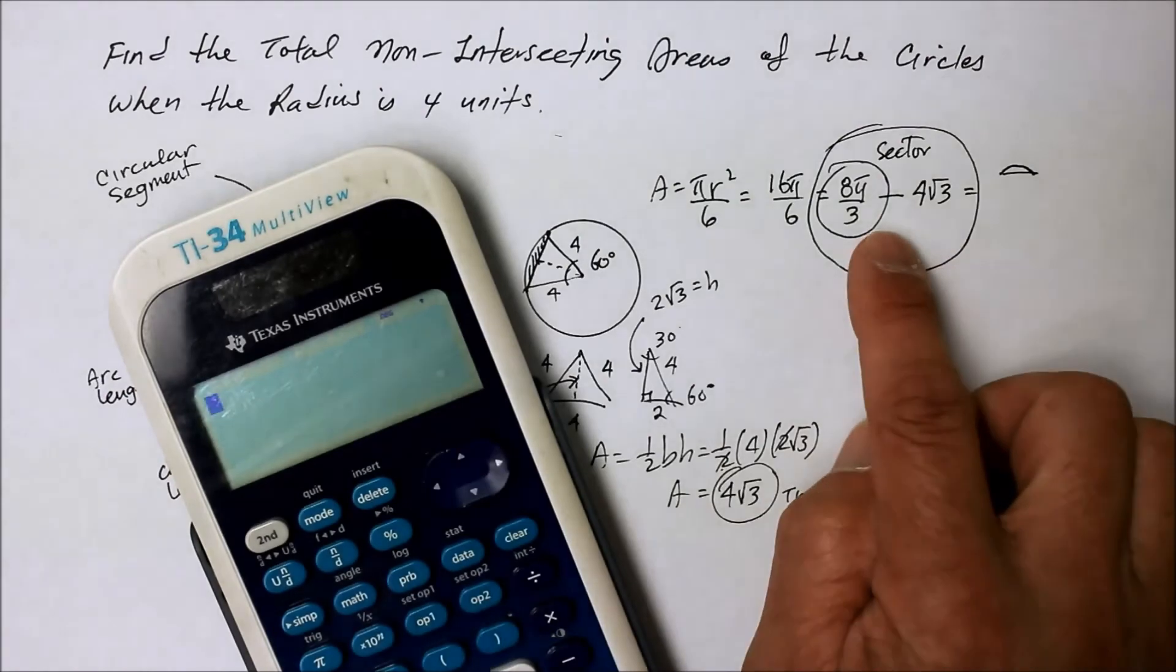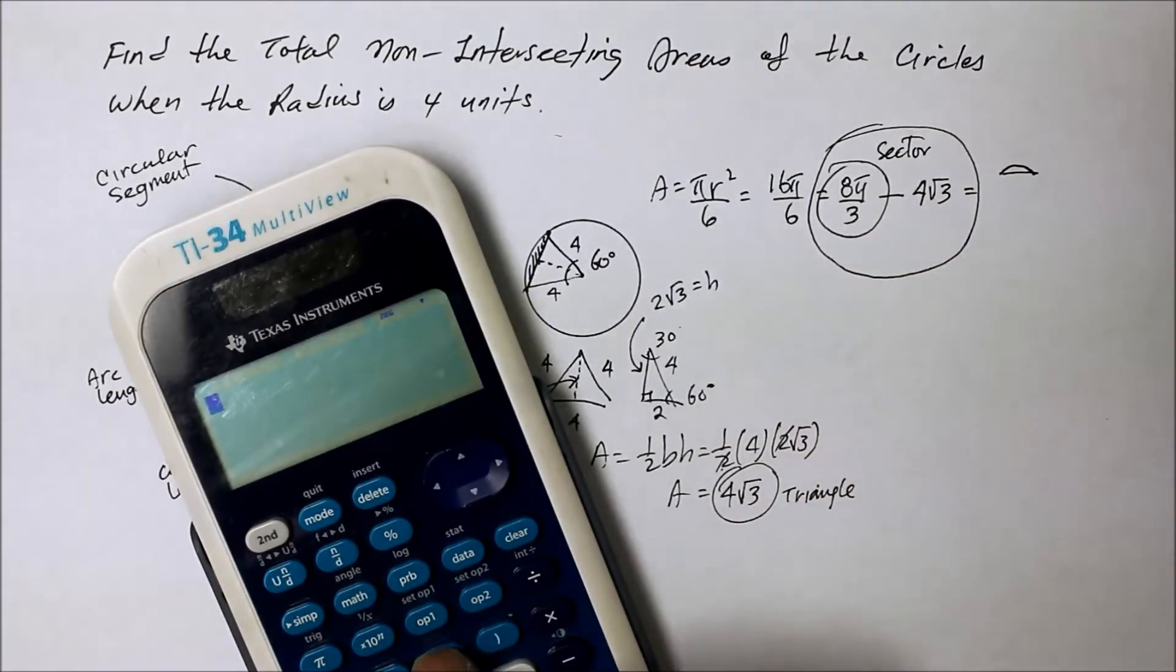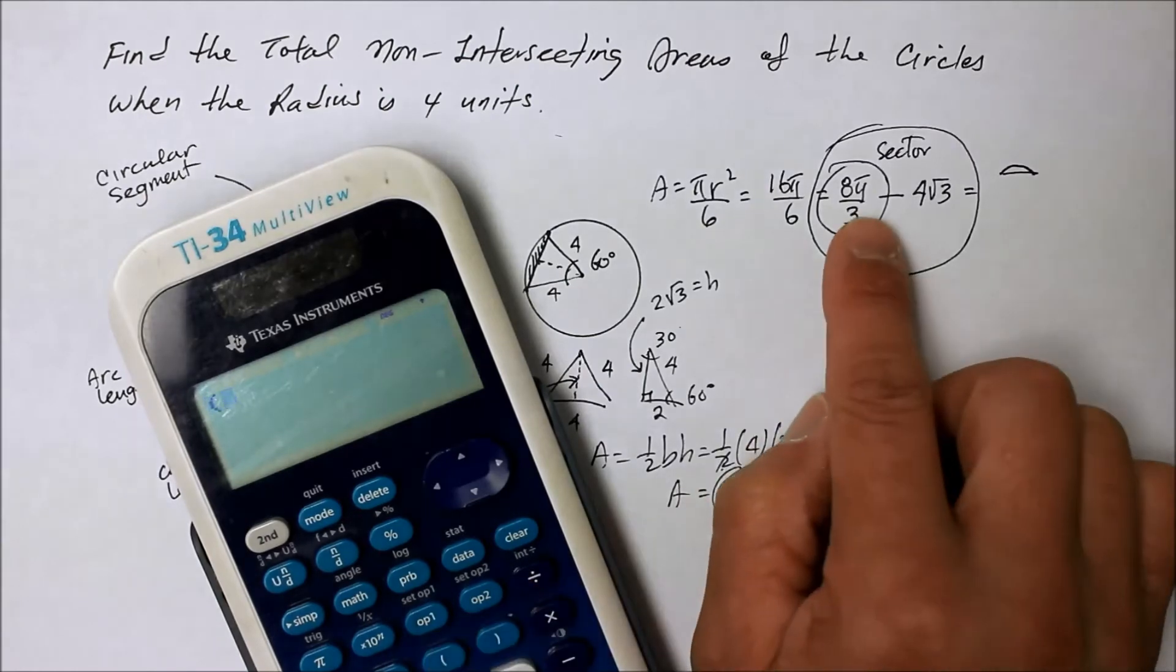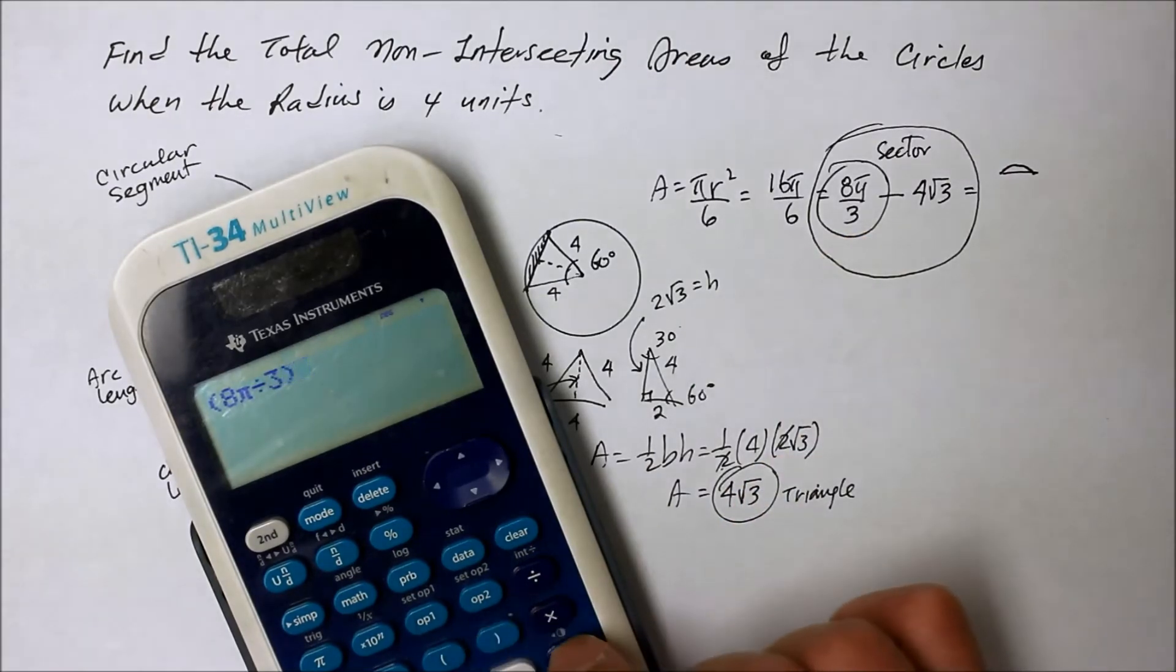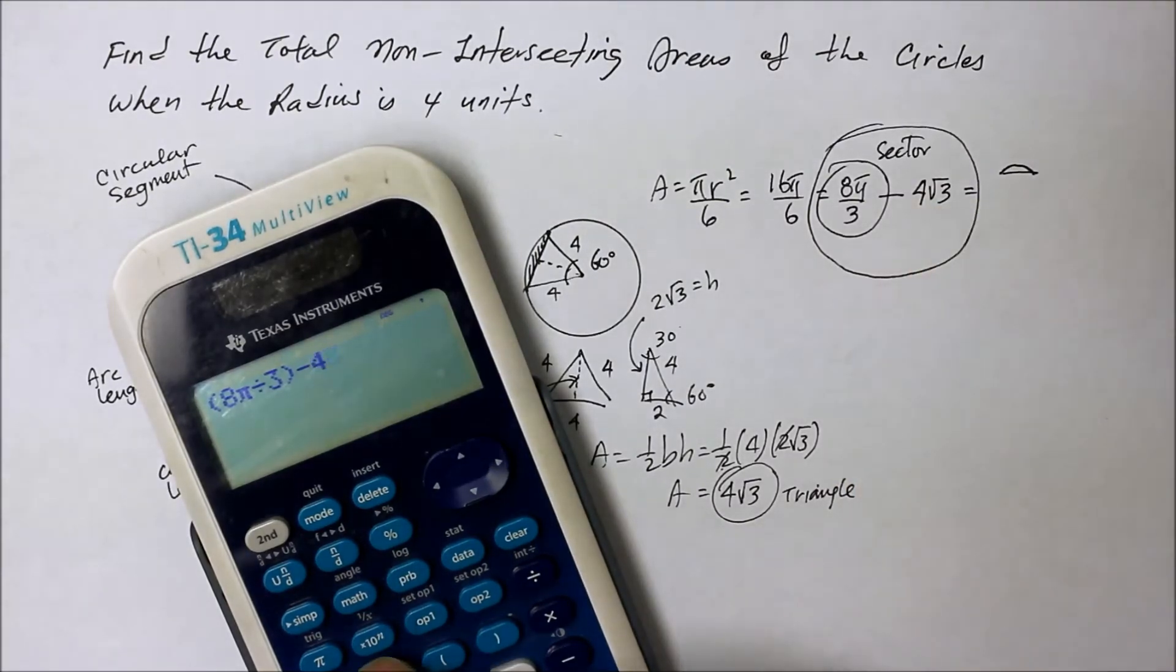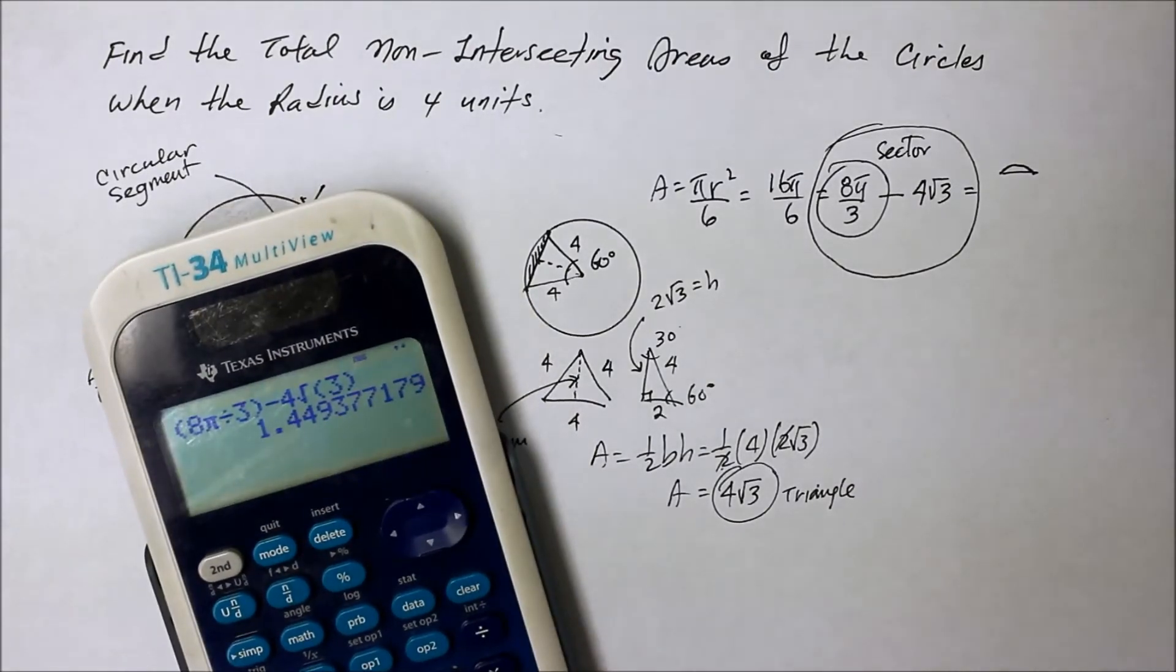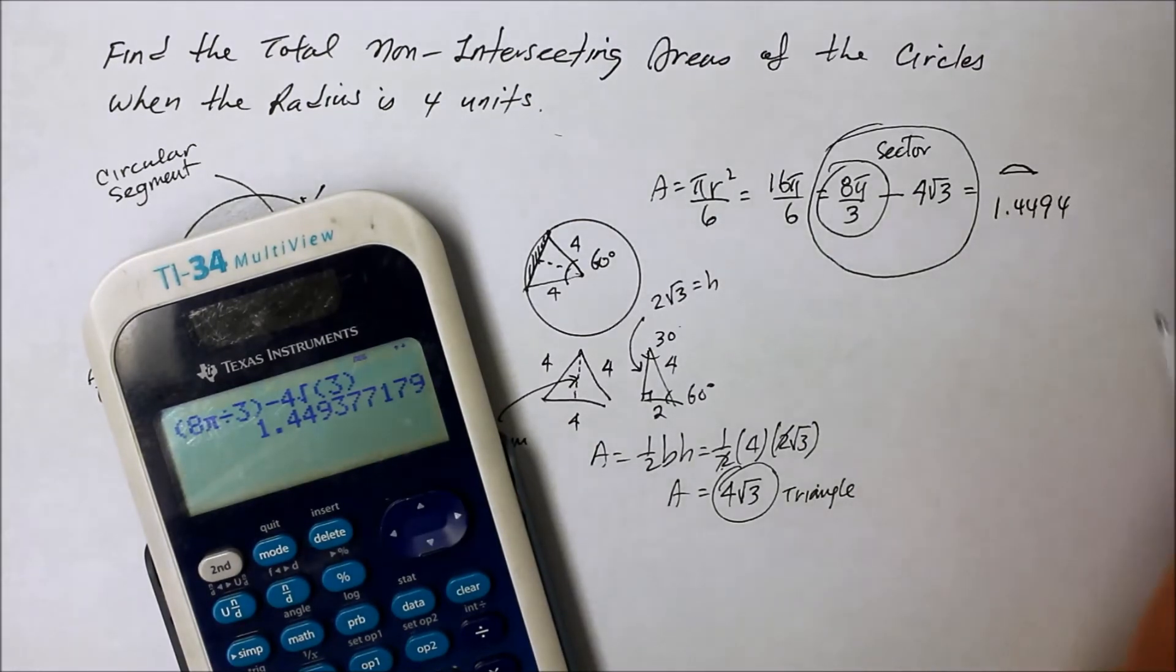Okay, but if you wanted to get an idea of what this would be, I guess I could punch it in a calculator like this. Let's use a parenthesis to enclose that first quotient. So 8 pi divided by 3, close parenthesis, minus the area of the equilateral triangle, the little one, which is 4 square root of 3.